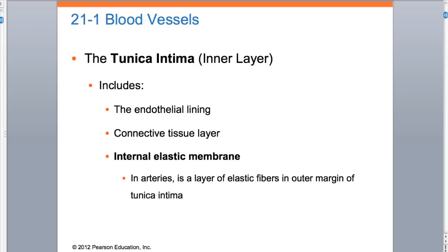The tunica intima is the inner lining. Inner lining, as you learned in 2401, if it's a lining, we know we're dealing with epithelial - hence the fancy name endothelial. So the endothelial lining is really made out of epithelial cells. Then the next layer outward, as you learned in 2401, we have epithelial cells, a thin basement membrane, and then right after the basement membrane we have connective tissue. This is the same thing here.